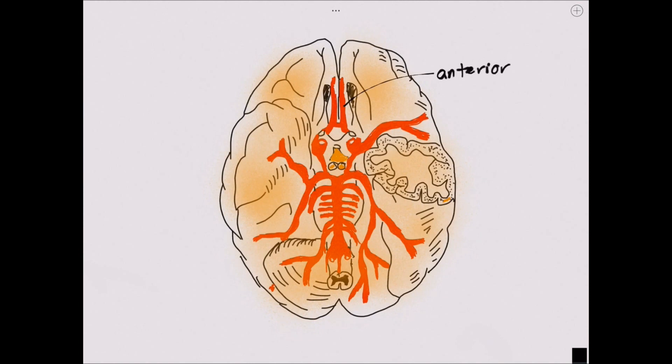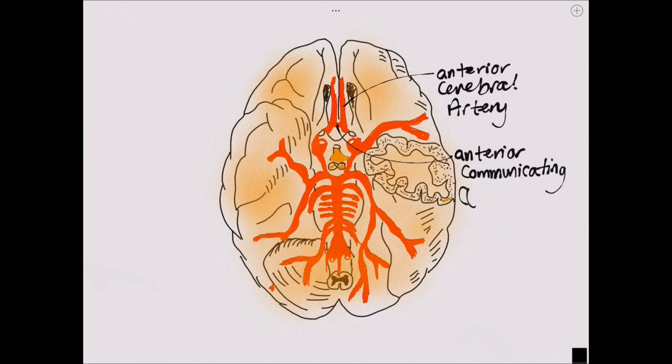We will begin by talking about the anatomy of the anterior cerebral artery. As you can see here, it arises from the most anterior part of the circle of Willis on the inferior aspect of the brain, and is connected to the other anterior cerebral artery by the anterior communicating artery.